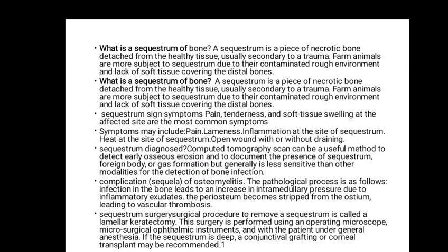Complications of sequestrum include osteomyelitis. The pathological process is followed by complications that lead to increased intramedullary pressure due to inflammation, and the periosteum becomes stripped from the ostium, leading to vascular thrombosis. Surgery for sequestrum is called sequestrectomy, performed usually under a microscope using microsurgical ophthalmic instruments.